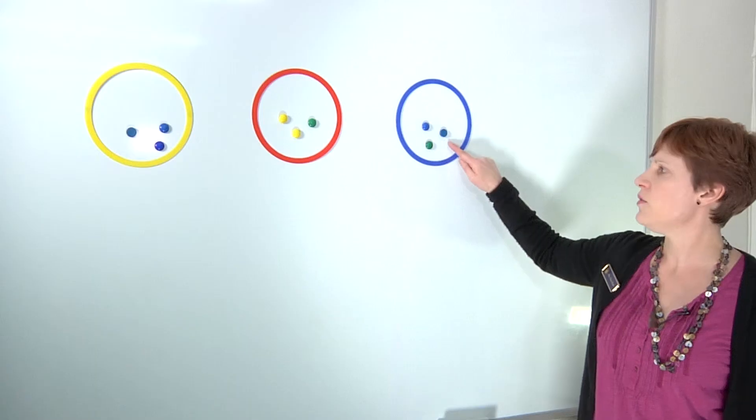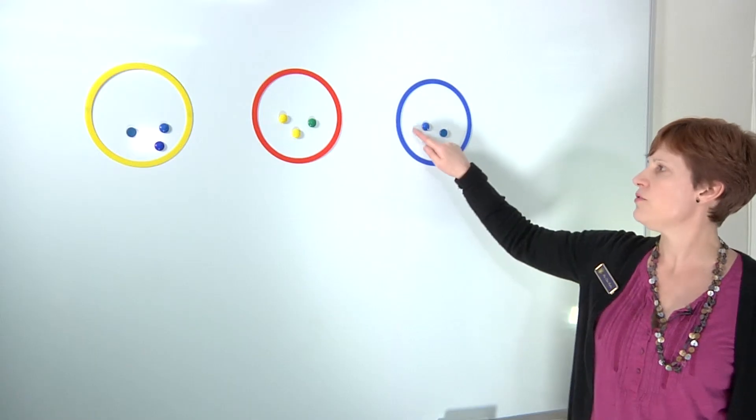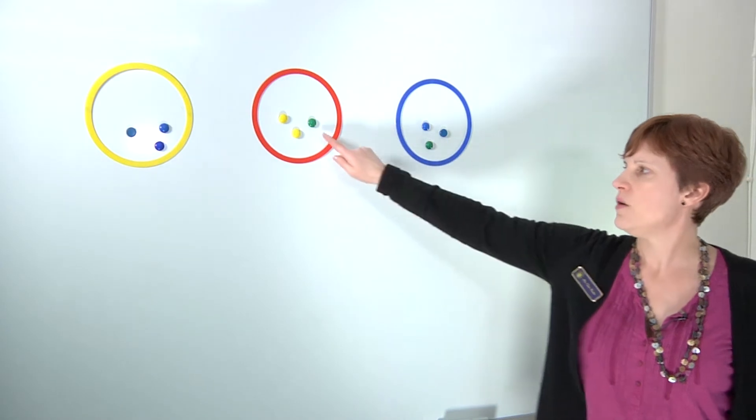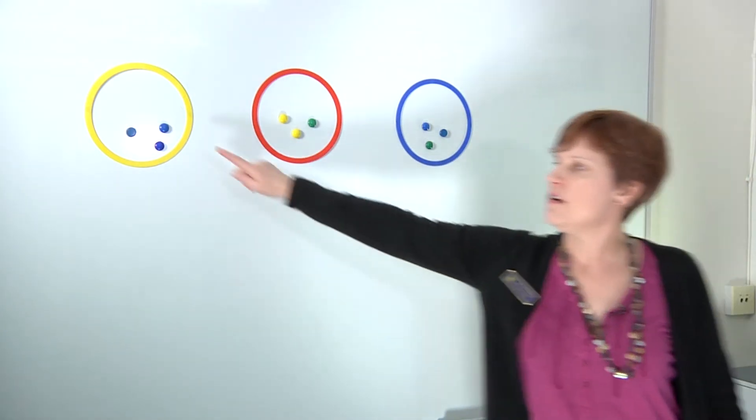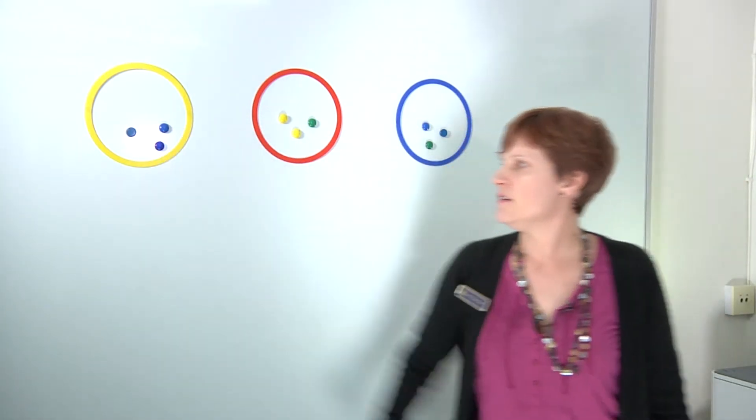Then we would count the sweets on each plate: one, two, three — one, two, three — one, two, three.